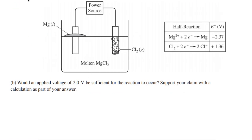Would an applied voltage of 2 volts be sufficient? Well, when we flip this reaction, we have negative 2.37 volts from the magnesium half reaction. And we have negative 1.36 volts from that half reaction, which means the E for this reaction ends up becoming negative 3.73 volts.